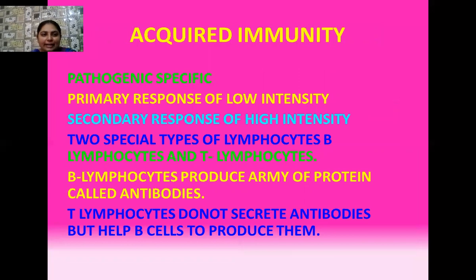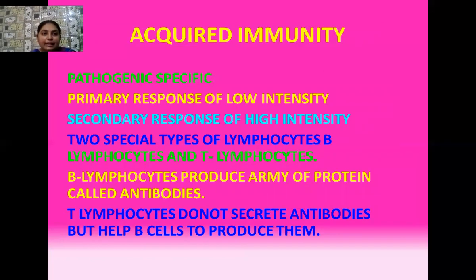Acquired immunity — this kind of immunity only gets active in your body when you are coming in contact with a certain pathogen or when a pathogen tries to enter into your body. Your body shows immune responses. The first time your body comes in contact with the pathogen, the defense cells get active and produce a first-time immune response which is of low intensity, known as the primary response. When the same pathogen enters again, a secondary response is produced which is of high intensity.